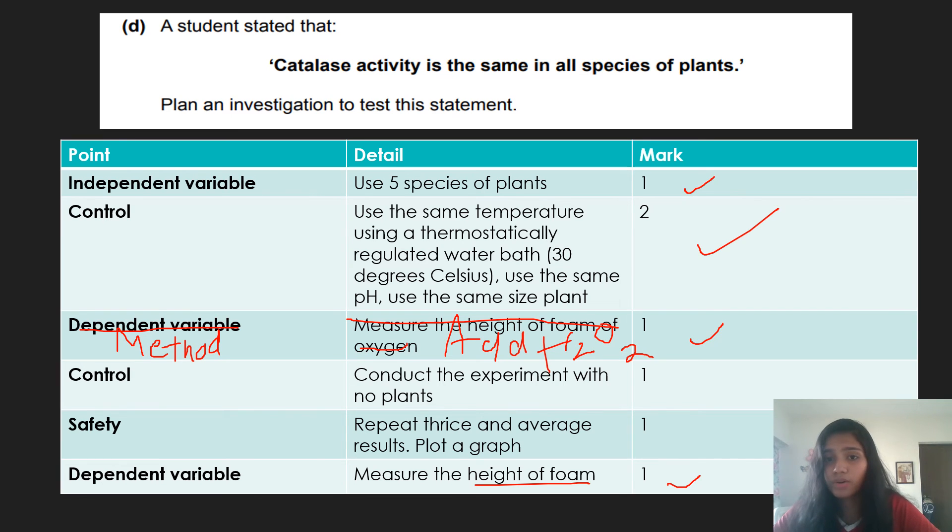So how many marks have I got? 1, 2, 3, 4, 5. I just need one more mark. And I have two whole more points I can add. That's all it takes. So you can either conduct the experiment with no plants in the H2O2 and see if there is any change to H2O2. So you can see that there is foam building up above the H2O2 to see if it's broken down. But that's basically your control. So you get one mark. And the safety is repeat thrice and average. Plot a graph you get one mark.